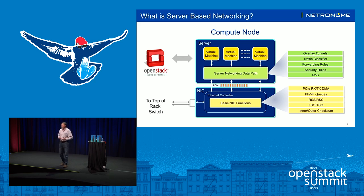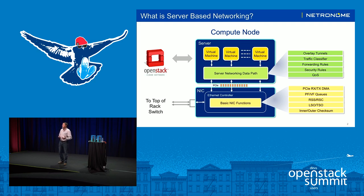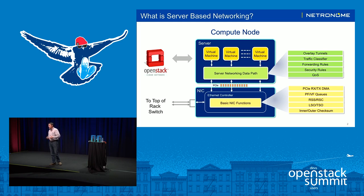In some cases, the basic NIC functions include things like basic offloads — RSS, LSO, checksum offloads, and things like that. There are also specialized offloads that some NICs do for things like storage. Once the packet is delivered to the server, that's where the server networking data path takes over, and this is where richer features are implemented. These richer features are critical to successful deployments of OpenStack clouds.